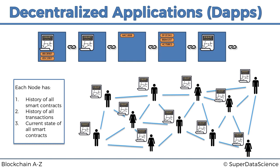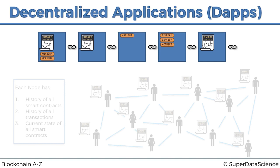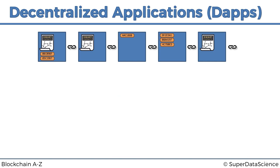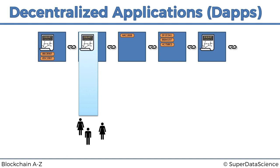So let's have a look. There's where we left off previously — we've got our smart contracts, we've got a network like this. The complexity of this system is growing very fast. Now, what is a dApp? Well, a dApp contains an interface for people to interact with something on the blockchain. So a dApp consists of a front end and a back end, which is the smart contract.